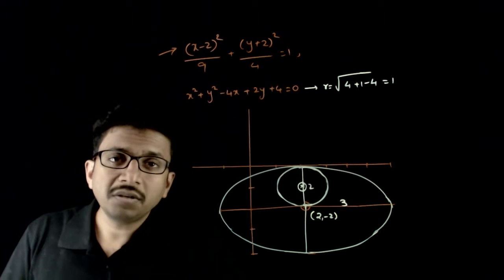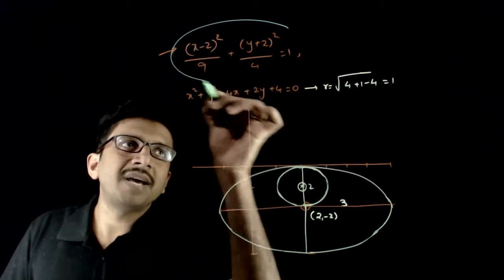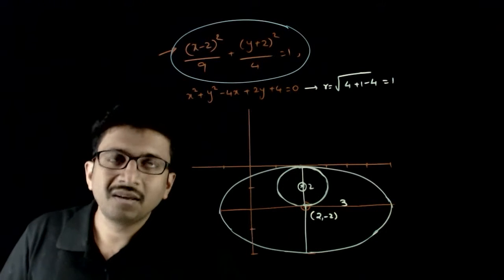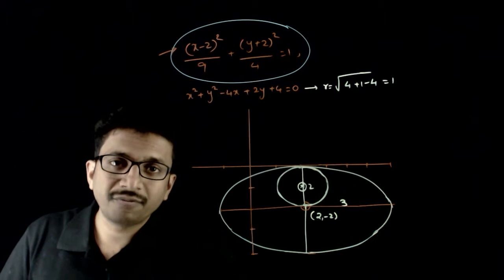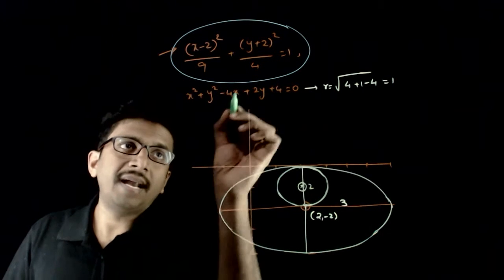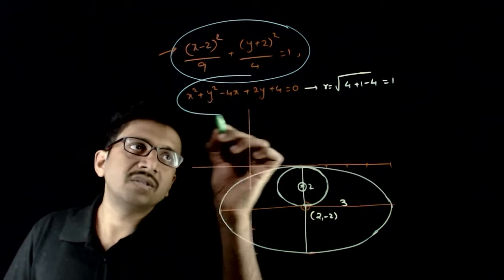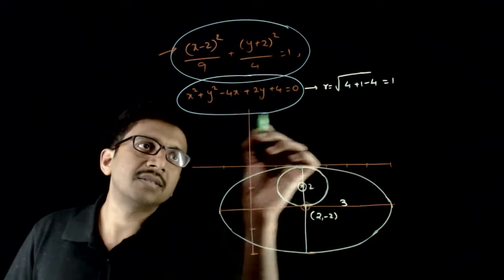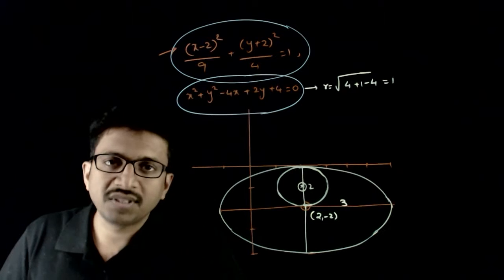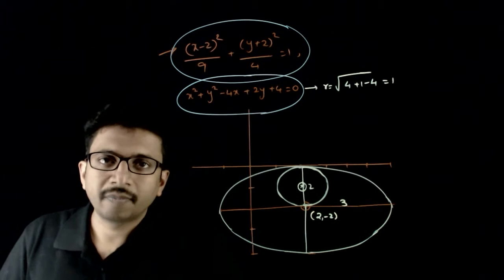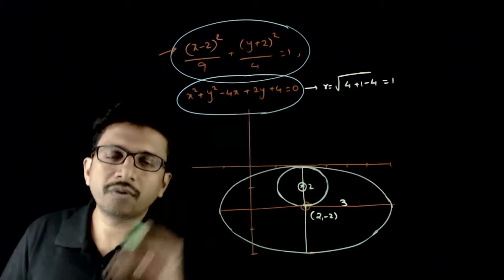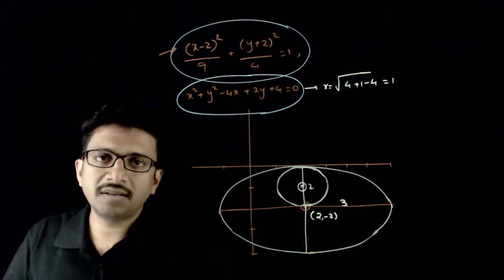Welcome students. In this question, you are given an ellipse (x-2)²/9 + (y+2)²/4 = 1 and a circle x² + y² - 4x + 2y + 4 = 0. You are asked to find the number of common tangents to this ellipse and circle.